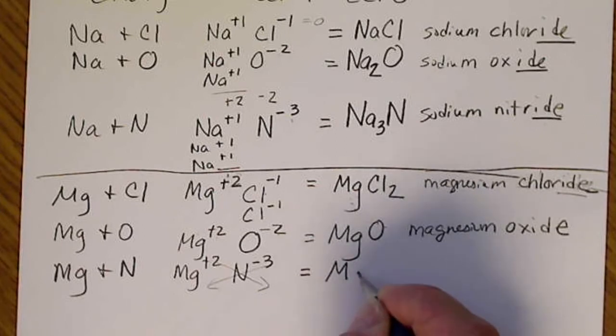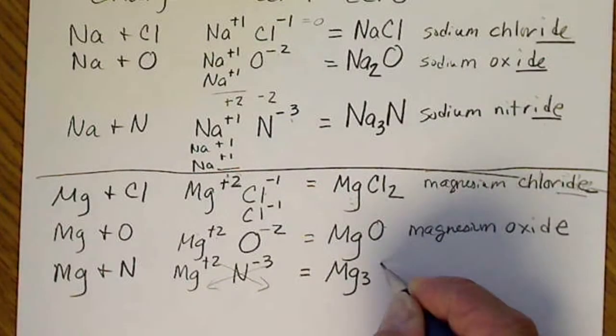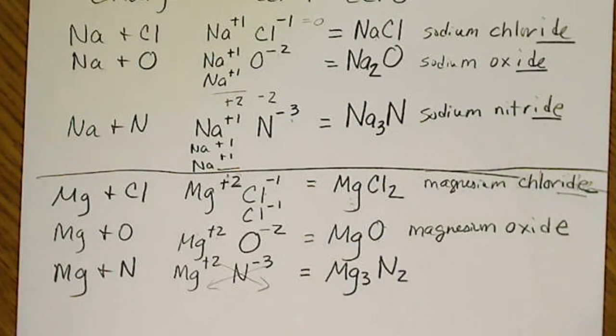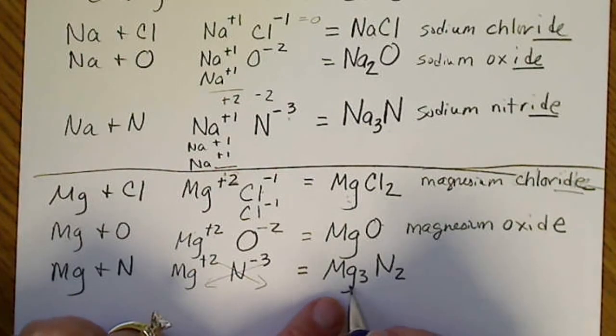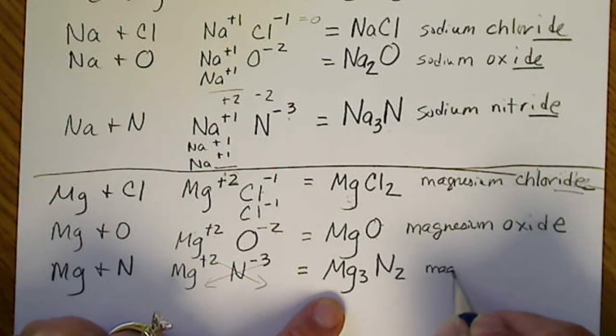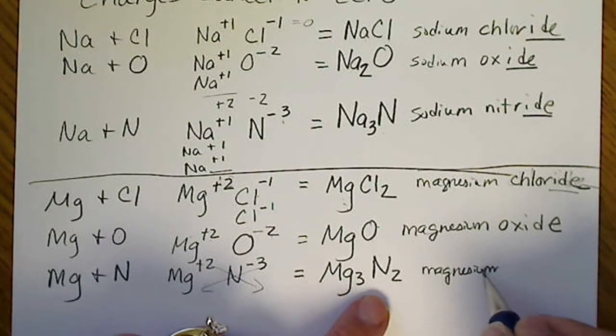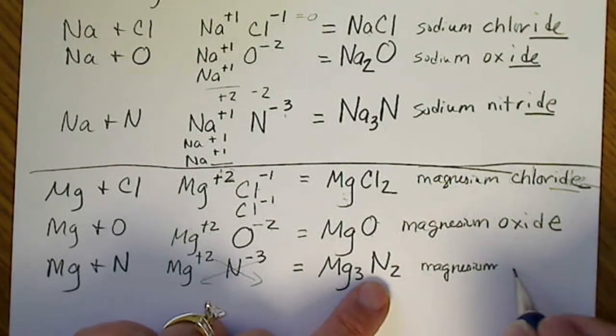I'm going to go ahead and name this. This is a metal, magnesium. So we just write magnesium. And that's messed up there. Nitrogen becomes nitride.